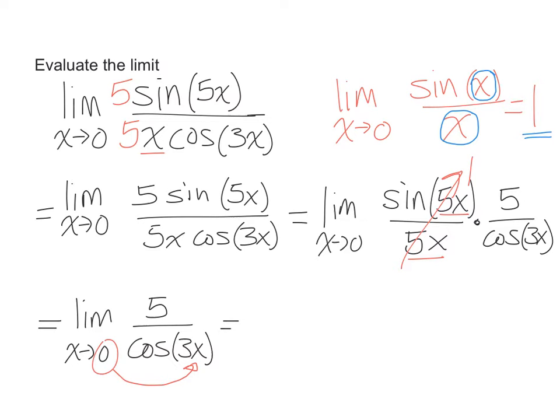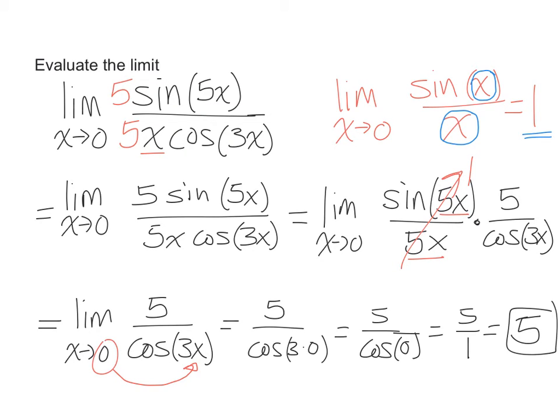So this equals 5 over cosine of 3 times 0, which is 5 over cosine of 0, which is 5 over 1. The cosine of 0 is 1, and that leaves you with 5 as your answer.